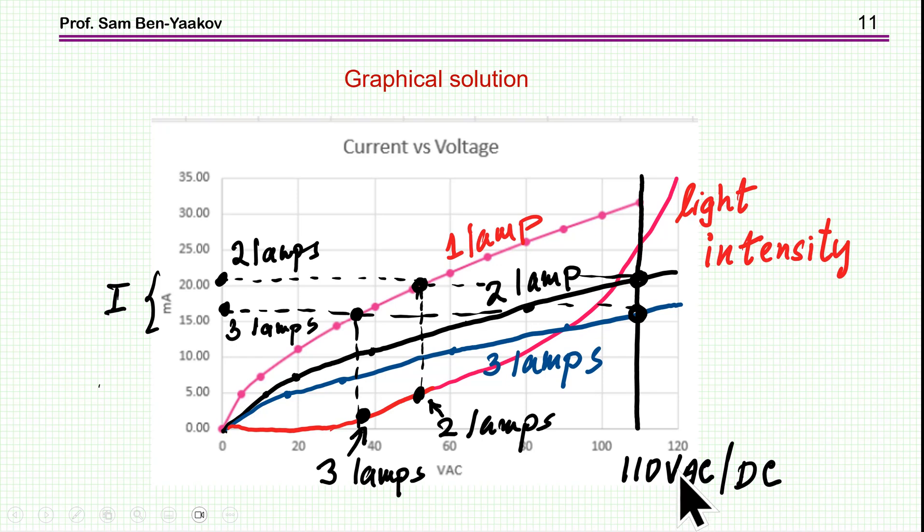So let's say it's 110 DC. And in this case, I find that when we have two lamps in series, this will be the current. And when we have three lamps in series, this will be the current. So obviously, it's going down because we have three units.